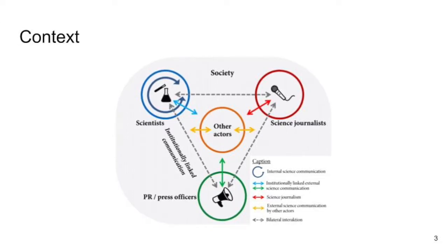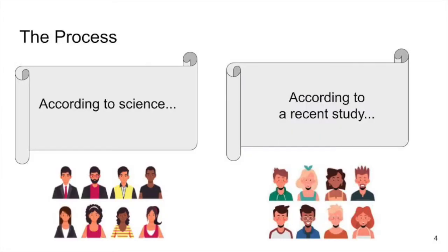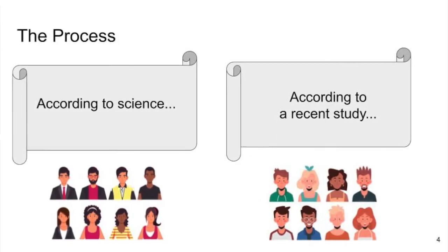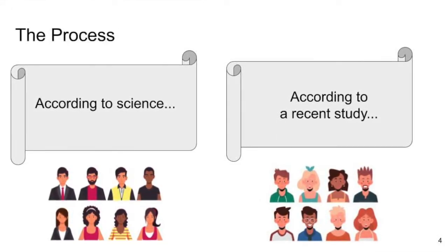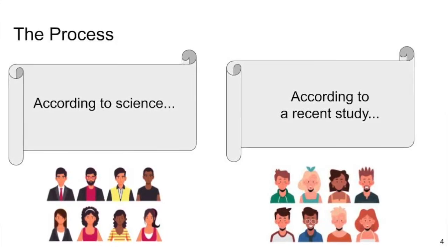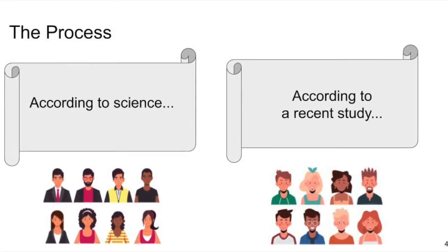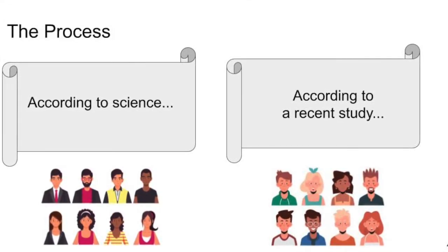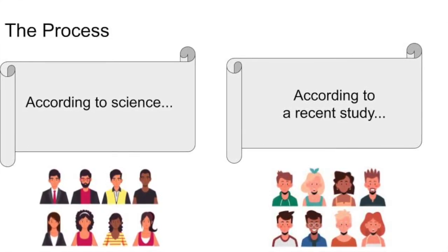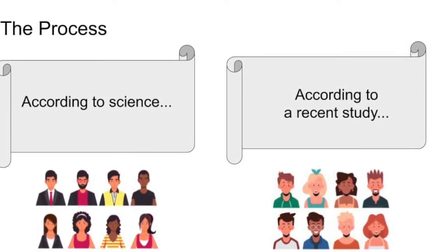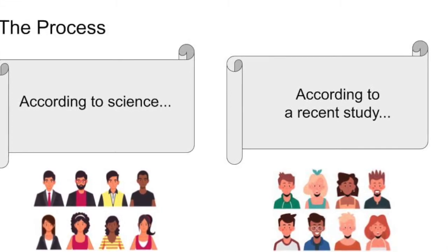So for this specific paper, what we did was we had two articles and in one of them we said according to science and then talked about the positive effects of waking up early in the morning. And then in the other article, the content was exactly the same, but instead of saying according to science, we said according to a recent study. And we had participants read either one article or the other.